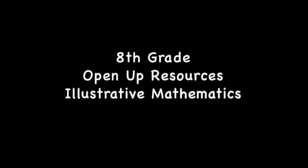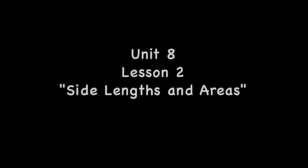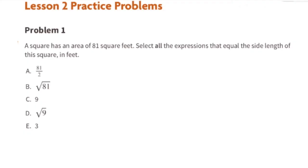8th grade Open Up Resources Illustrative Mathematics, unit 8 lesson 2: Side Lengths and Areas. Problem number one — a square has an area of 81 square feet. Select all the expressions that equal the side length of this square in feet.